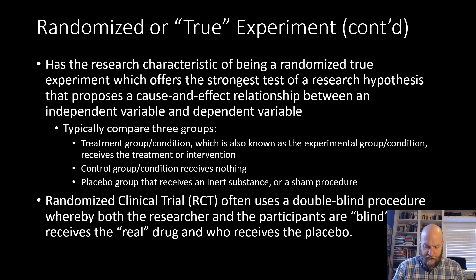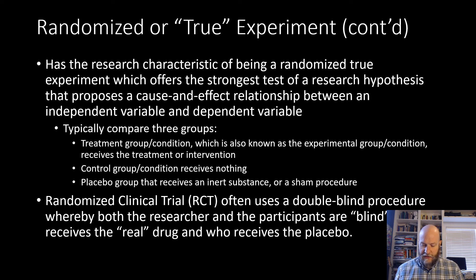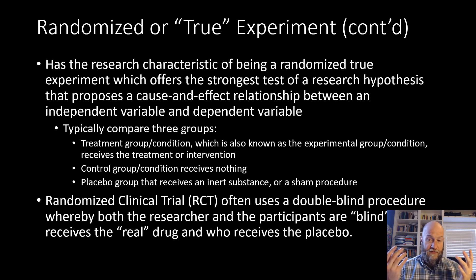Another aspect of why randomized experiments are the gold standard in research design is that they have the strongest tests of a research hypothesis to propose cause and effect between the independent and dependent variable. A very typical example is one with three conditions: a treatment group condition, also called the experimental group — the group that receives the treatment or intervention we're really interested in. In my example of a new treatment for depression, this would be people who receive that new treatment.